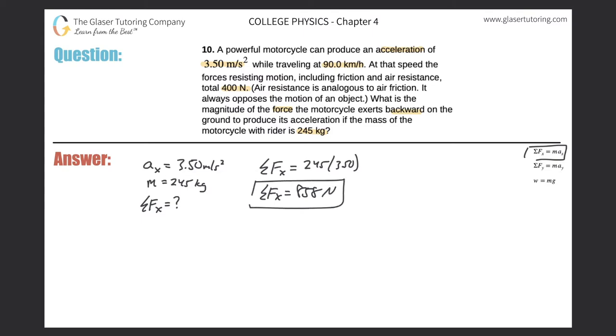Now, it doesn't ask us for the net force. It asks us for the magnitude of the force the motorcycle exerts backward on the ground. So why don't we now just draw a little diagram here? Now, the net force is positive and it's pointing to the right.